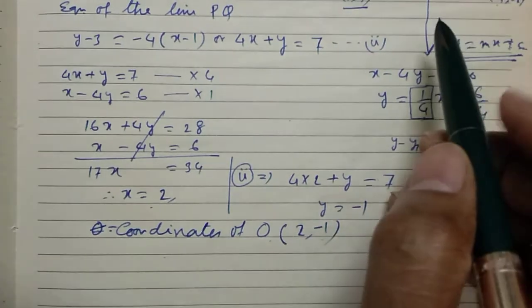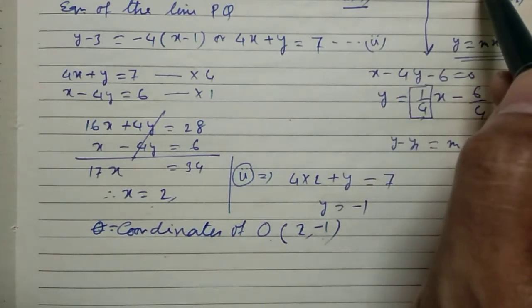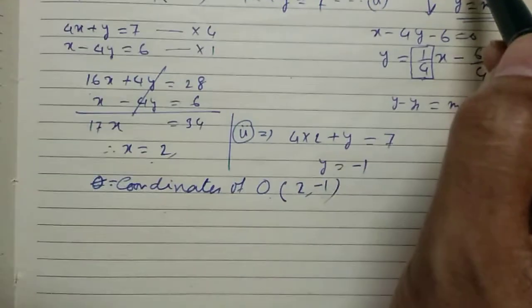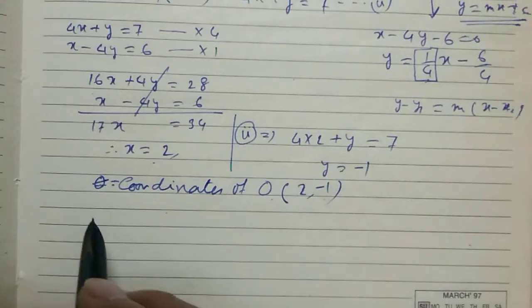Now, since this is the perpendicular bisector of the line segment PQ, hence we can say O is the midpoint of PQ.